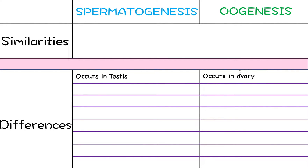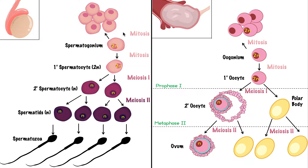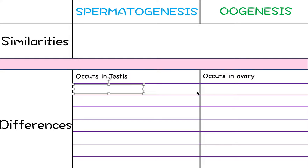Another key difference: during spermatogenesis, from one spermatogonium stem cell, the full process produces four spermatozoa — four mature sperm. Whereas in a female, from the stem cell we only produce one mature egg cell; the rest are just polar bodies. During one menstrual cycle, a female only releases one egg, which is why typically during one month it's only possible to make one baby. So spermatogenesis makes four mature sperm; oogenesis makes one.